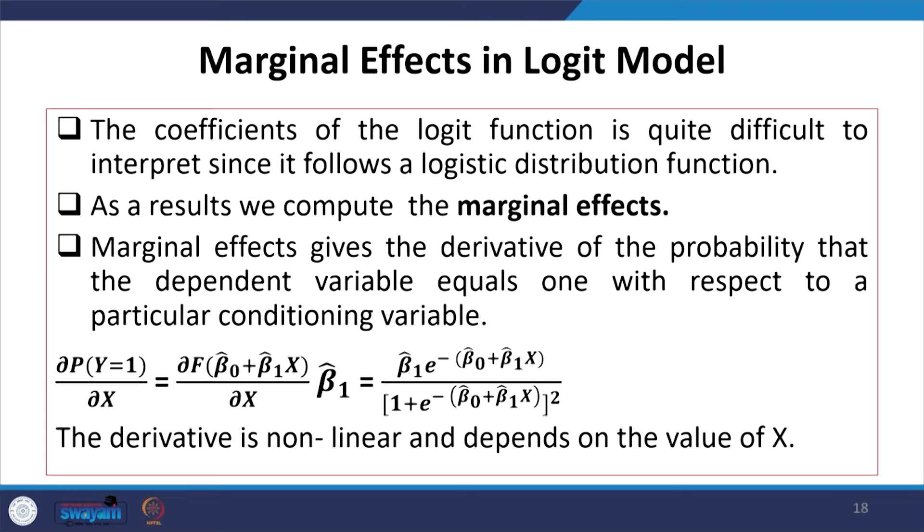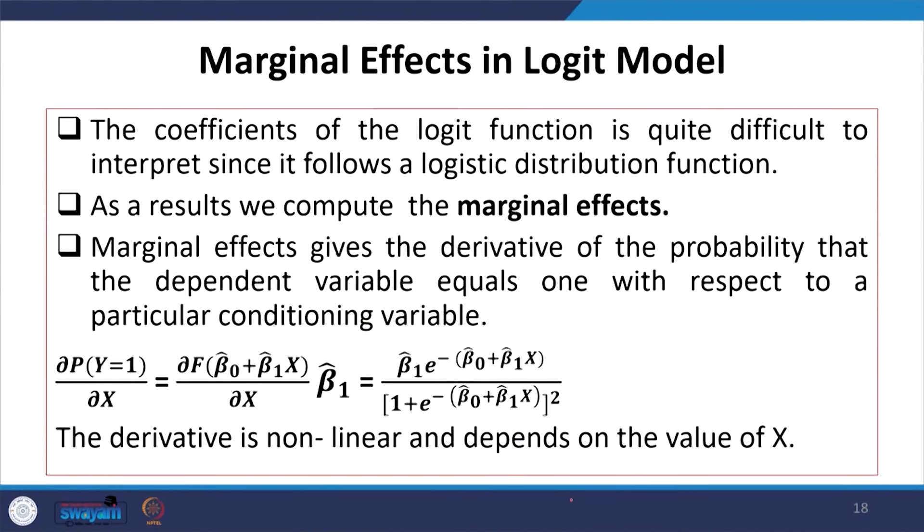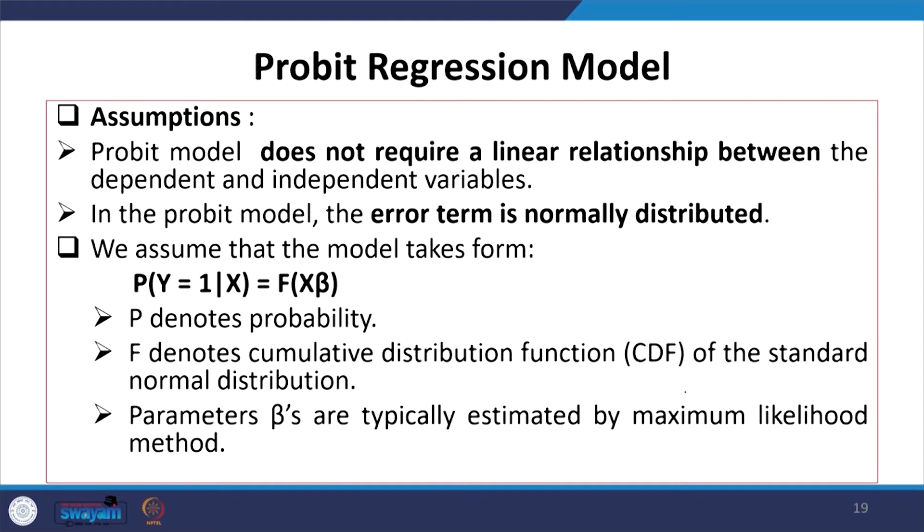Whenever you derive a logit model, it is always suggested to derive marginal effects, because logit does not have continuous variables in the usual sense. By ordinary least square regression, we get marginal changes for each control variable on the dependent variable. But since in logit, it is a discrete change from 1 to 0, we are supposed to further compute the marginal effect — essentially taking the derivative dp by dx.